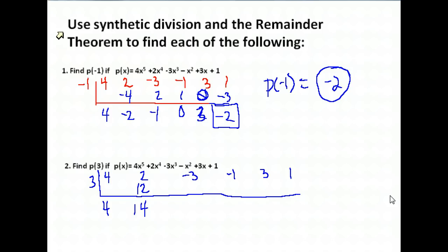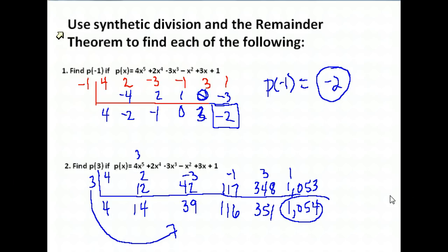And multiply. 3 times 14 is 42. And add. Negative 3 plus 42 is 39. And multiply, 3 times 39 is 117. And add. Negative 1 plus 117 is 116. And multiply. 116 times 3, this is getting big, it's 348. And add. 348 plus 3 is 351. And multiply, 351 times 3 is 1053. And add. We get 1054. So when we plug in 3 for every value of x here, we should get 1054. The other way we can do it, as we just did here, is by using synthetic division.